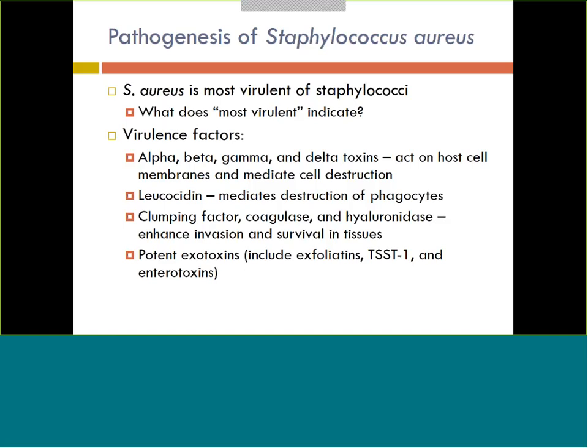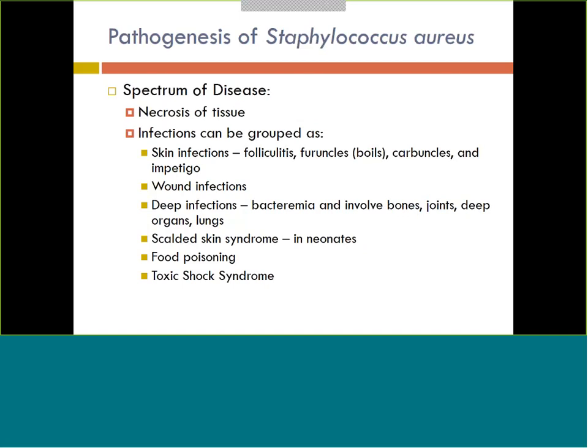There's also an enzyme called hyaluronidase that helps break down connective tissues. At the bottom is the toxin TSST-1 — that's your toxic shock syndrome toxin. For women, this should ring a bell: if you leave your tampon in too long, it could lead to risk of toxic shock syndrome. Staph aureus is one of the bacteria that causes toxic shock syndrome, and it has toxins that help lead to that.